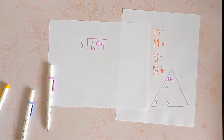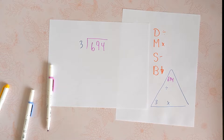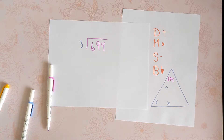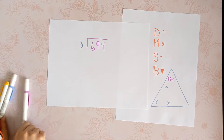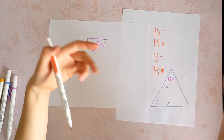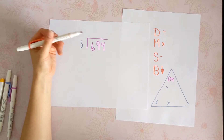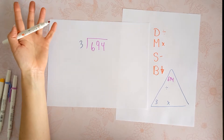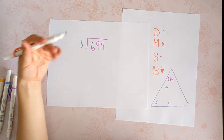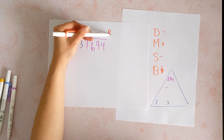Now, we're going to have a remainder, because you can't actually divide 694 by 3 evenly. If I have 3 friends and I have 694 balloons and I'm giving them to my 3 friends, I'm going to end up with some left over that I can't divide equally — and that's my remainder.